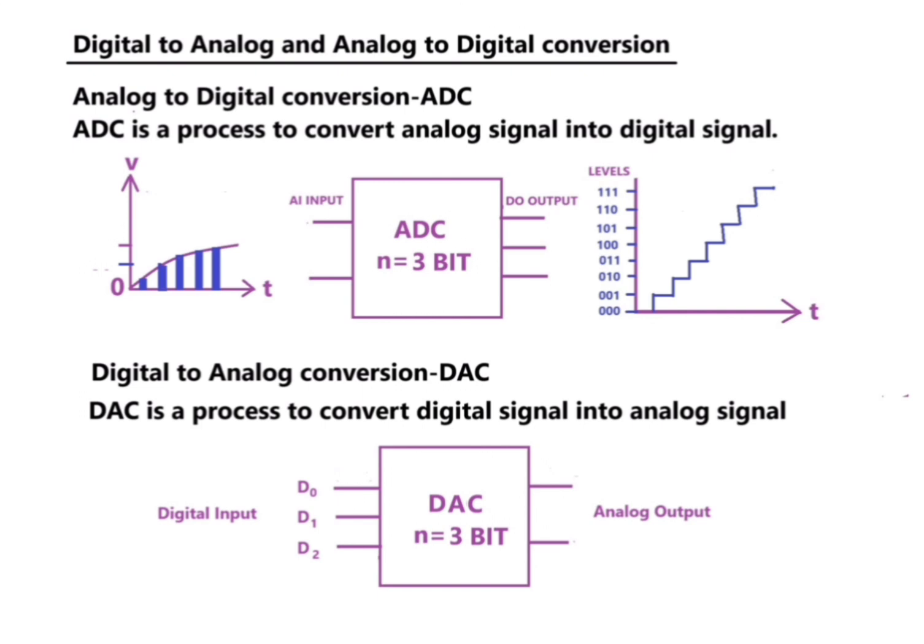The block diagram is also given here for a 3-bit digital DAC, where a 3-bit data input is converted into an analog output. Ok, thank you.